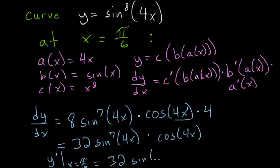we have 32 times the sine of 4 pi over 6, so 2 pi over 3, and that's all raised to the 7th power, times the cosine of 4 times pi over 6, which again is 2 pi over 3.